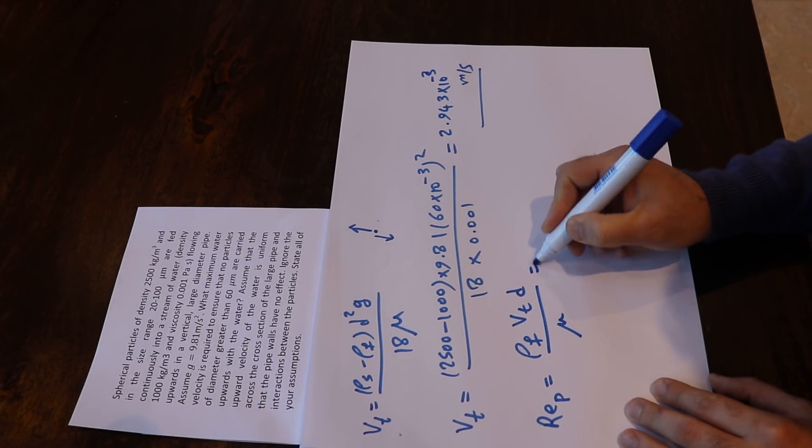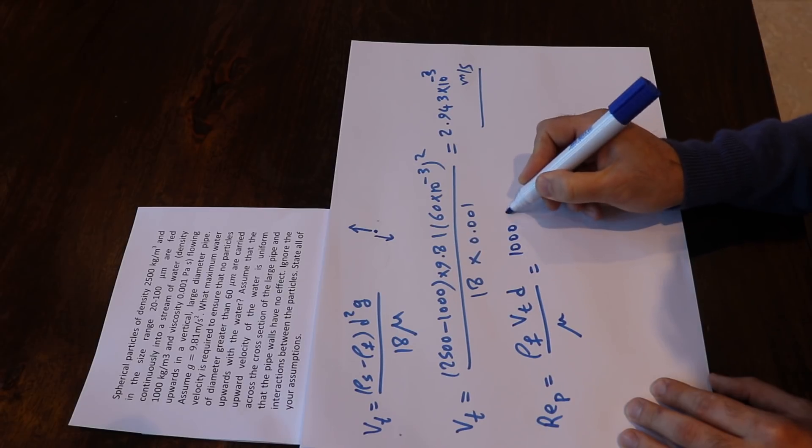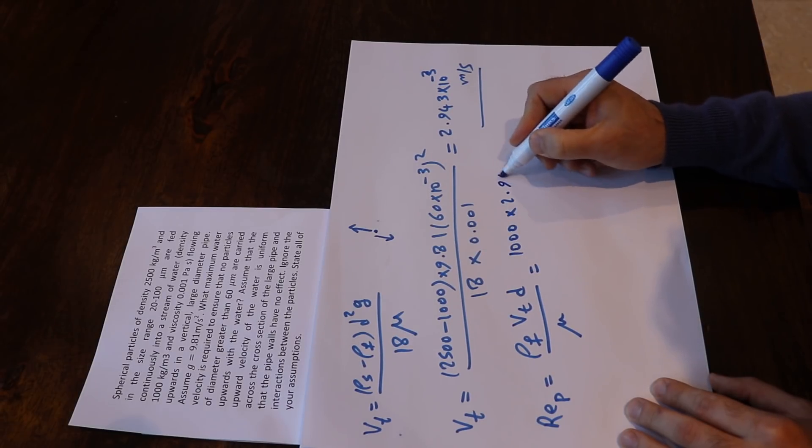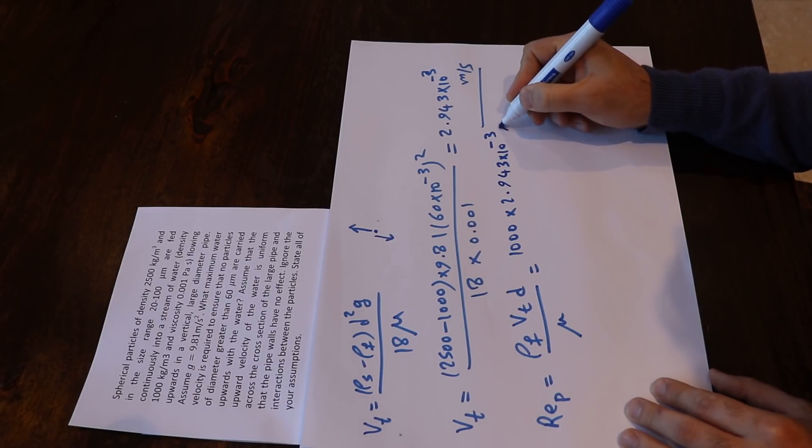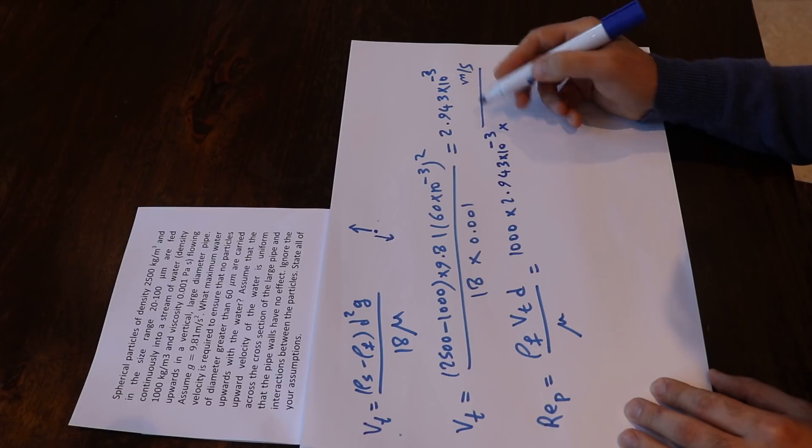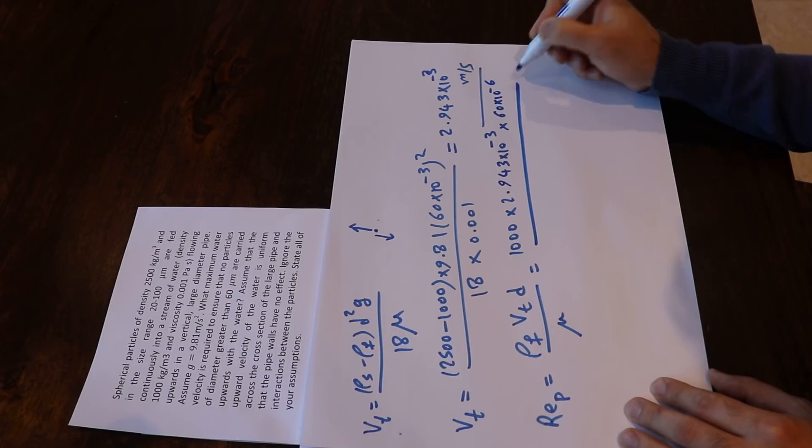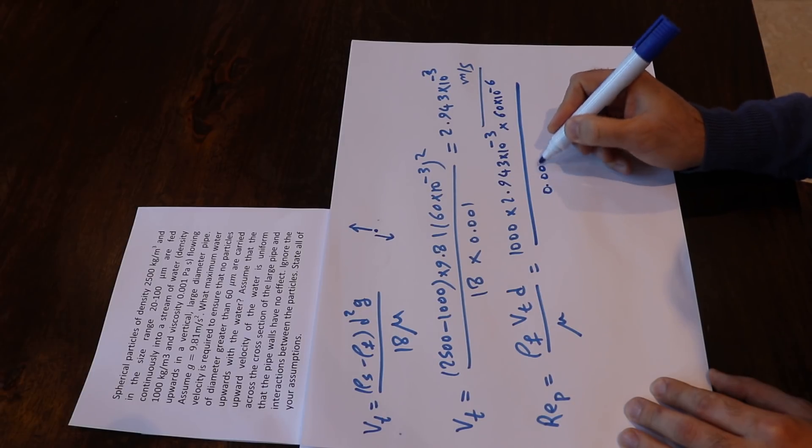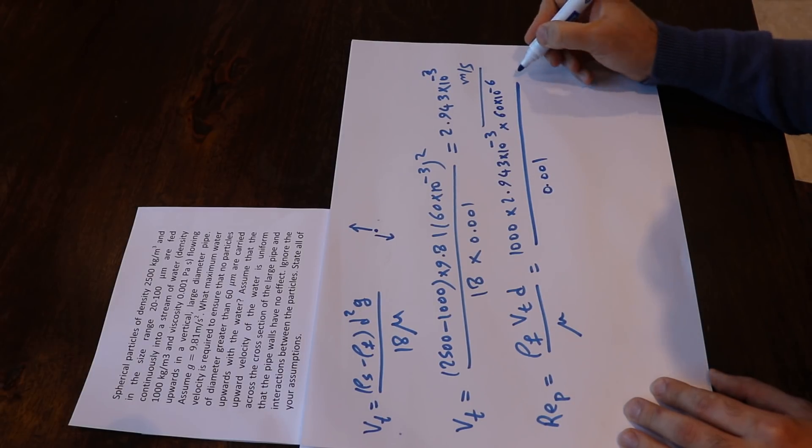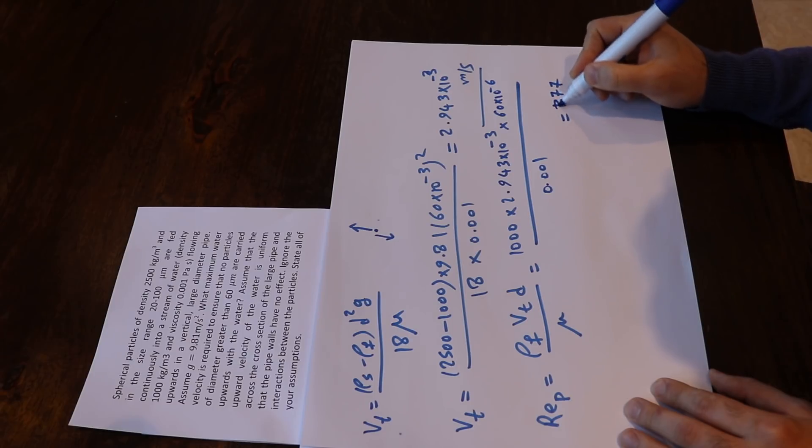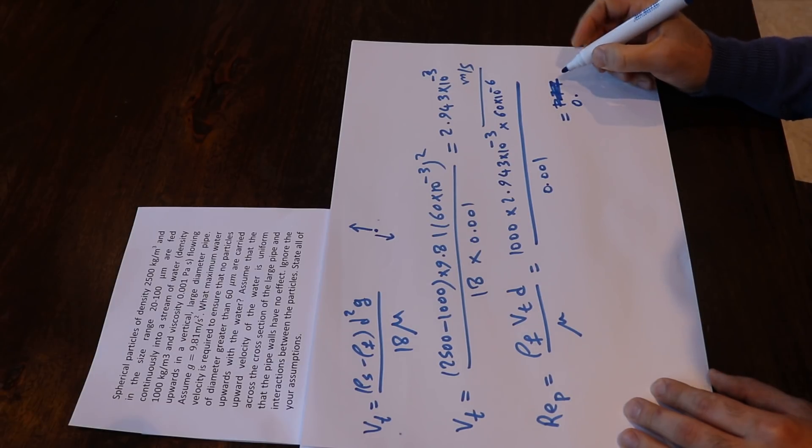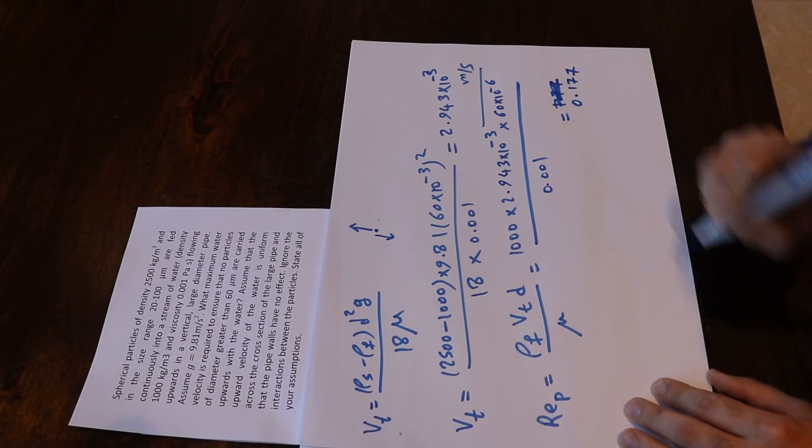ρ is 1000 × 2.943 × 10^-3, which is here, times the diameter, that is 60 × 10^-6, divided by 10^-3, which will equal 0.177.